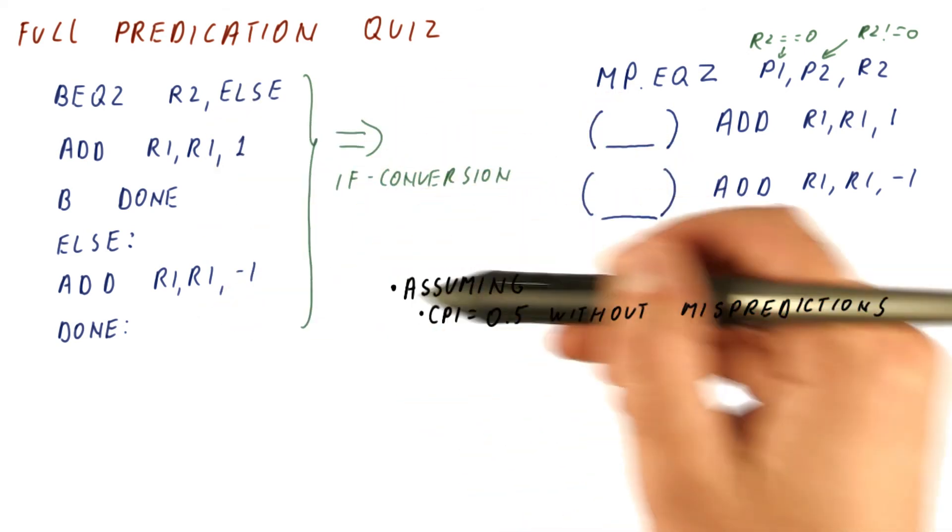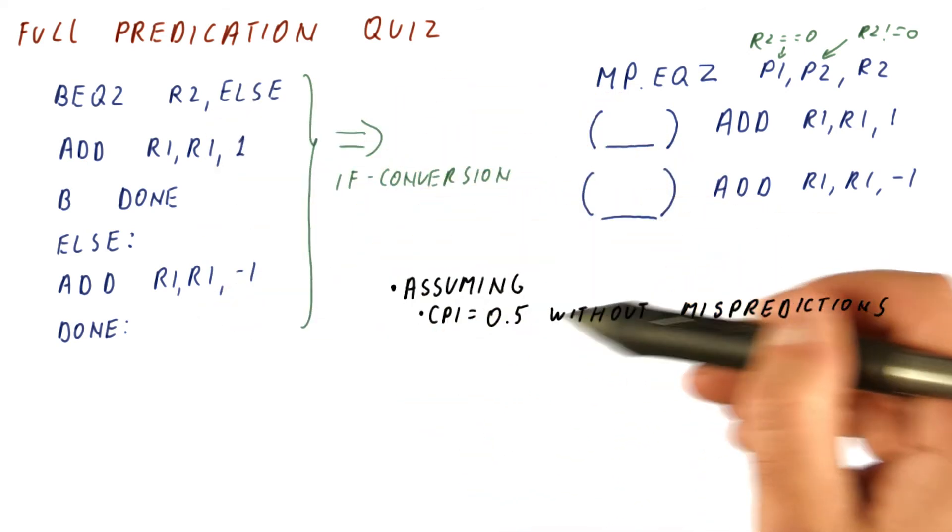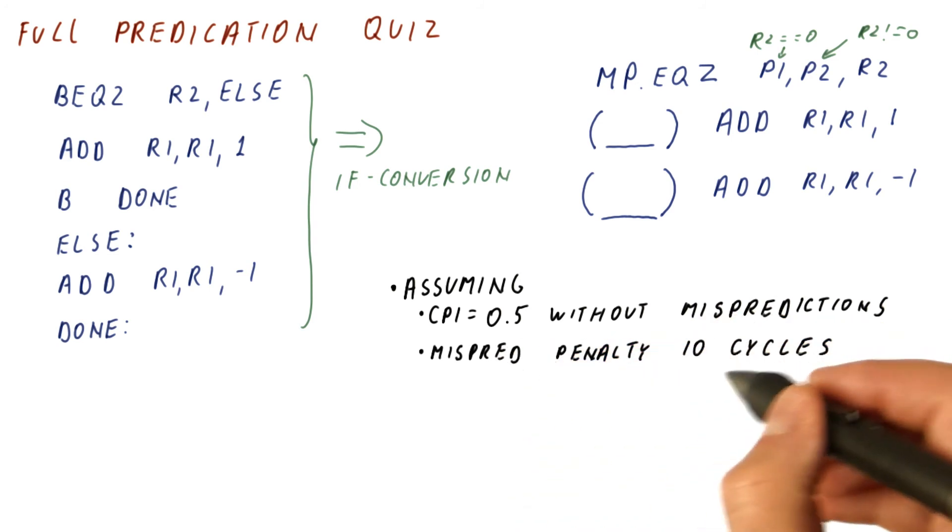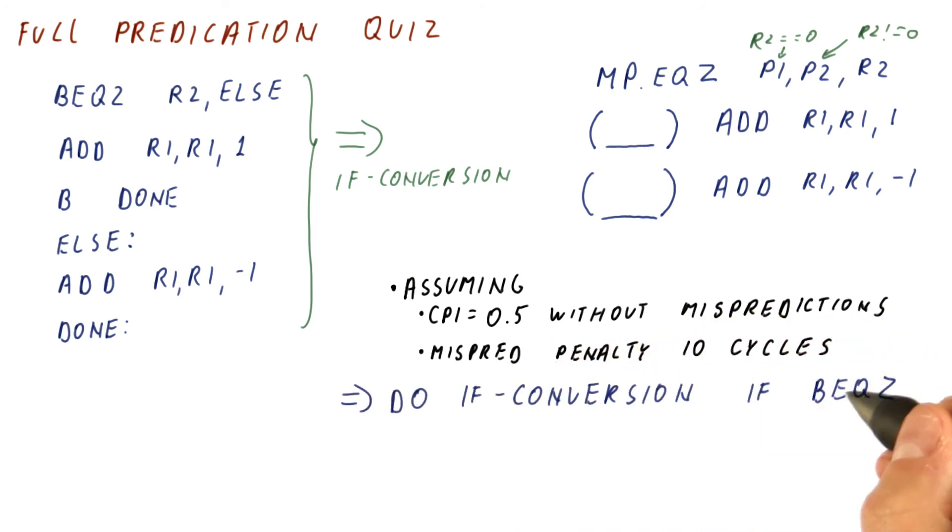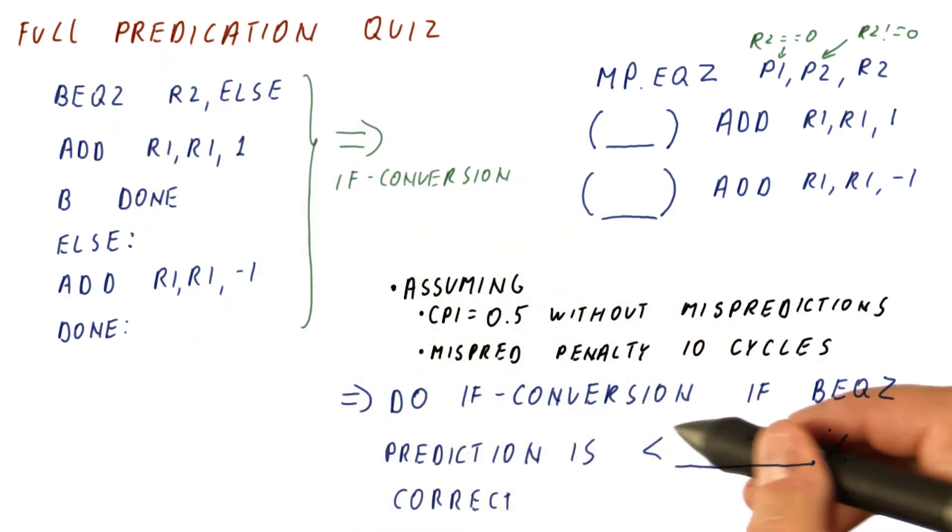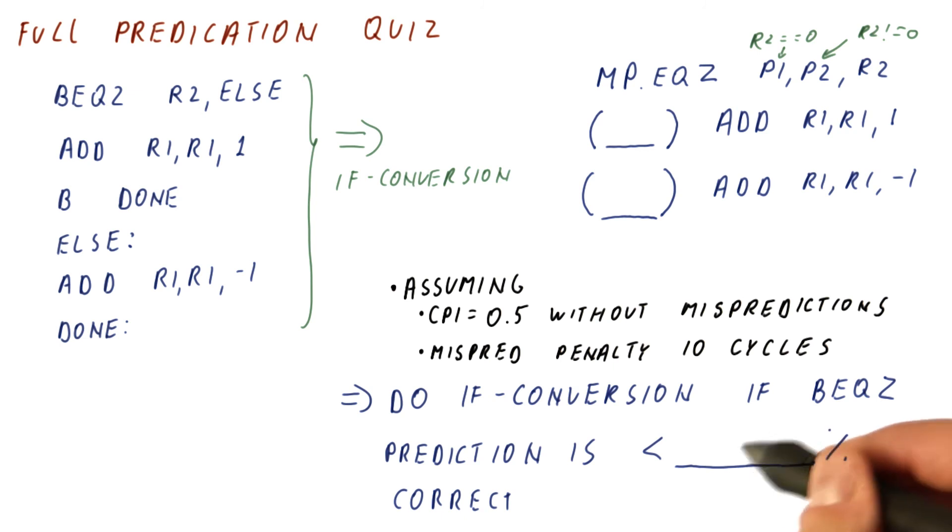If we assume that this code gets us a CPI of 0.5 without mispredictions, and that the misprediction penalty is 10 cycles, then we should do the if conversion if the branch equals 0 here is predicted below what accuracy. So do if conversion if branch equals 0 prediction is less than what percentage correct.